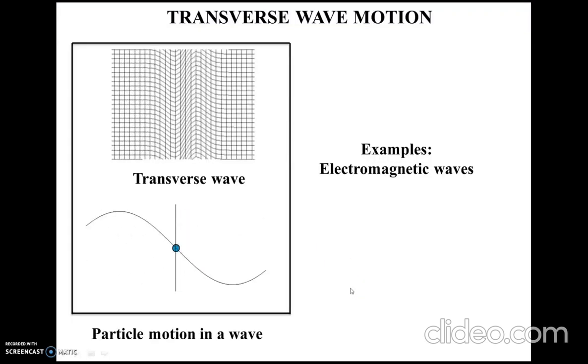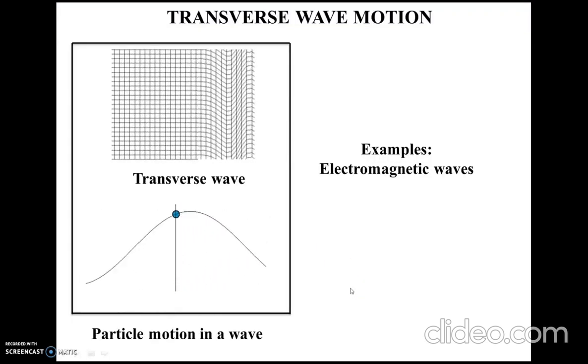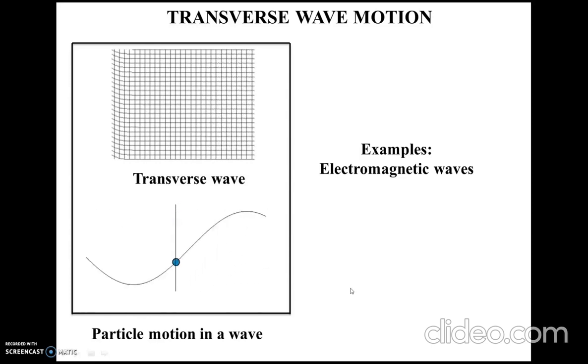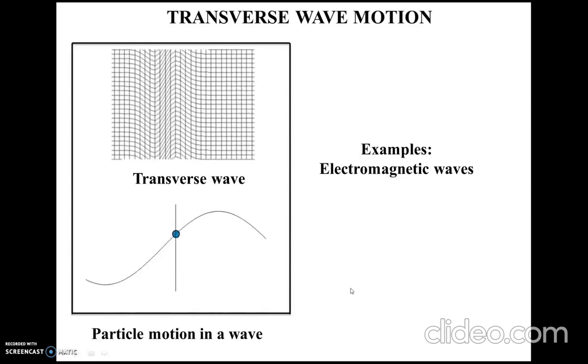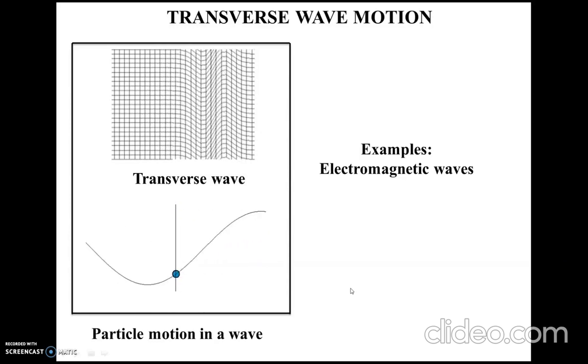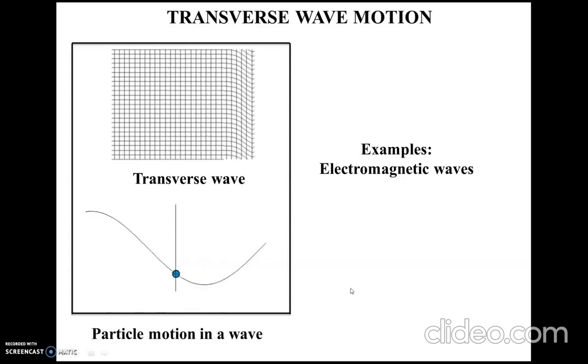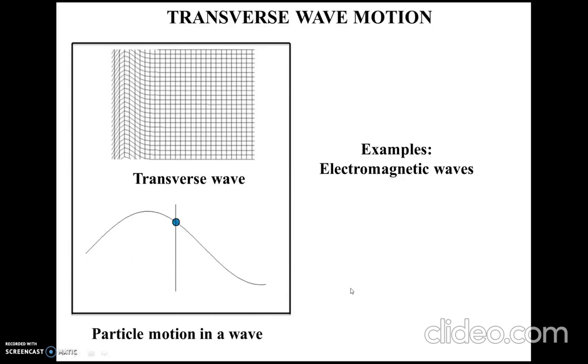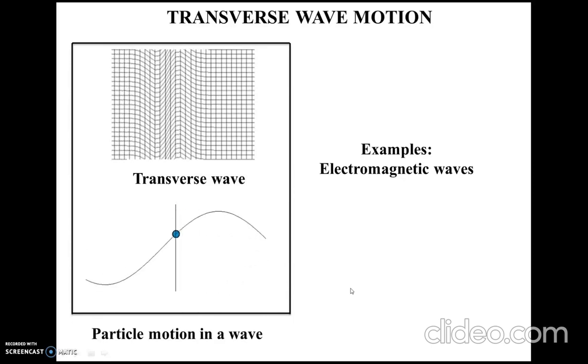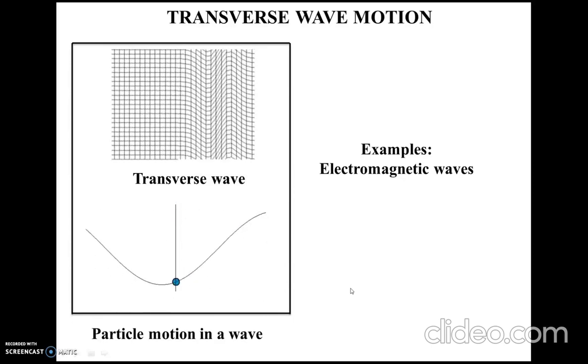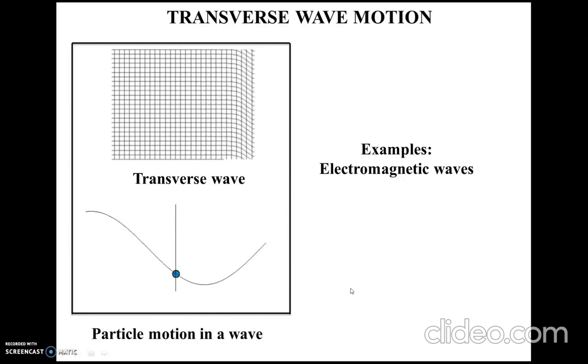As we were discussing before, the light is part of the electromagnetic spectrum. It has transverse motion of the oscillators that are present in the electromagnetic wave. These atoms or molecules are vibrating in this transverse motion as the light is propagating.